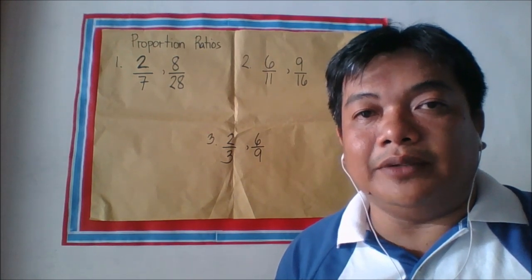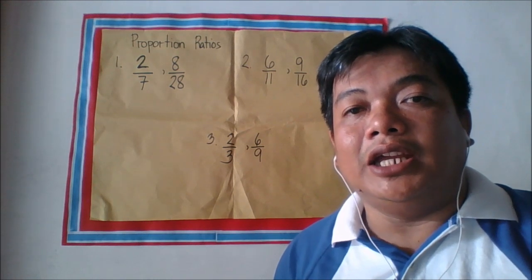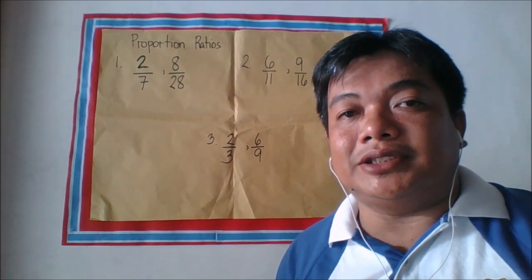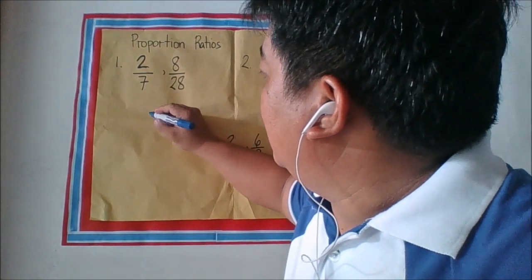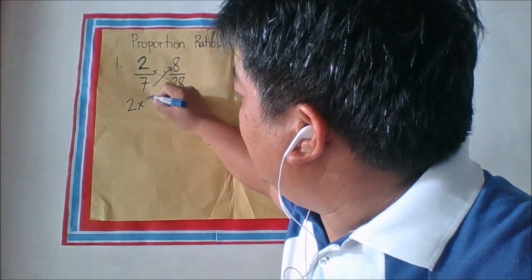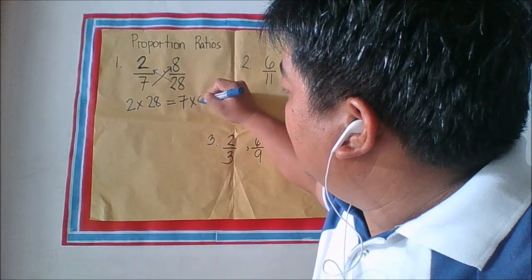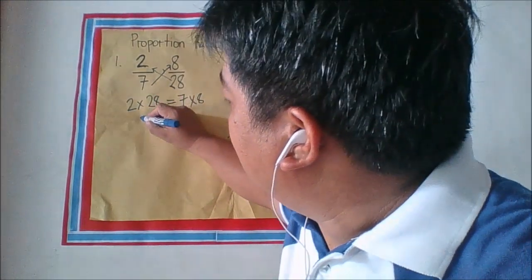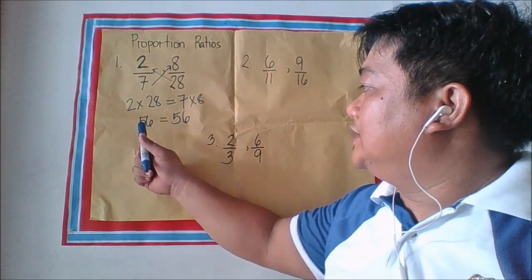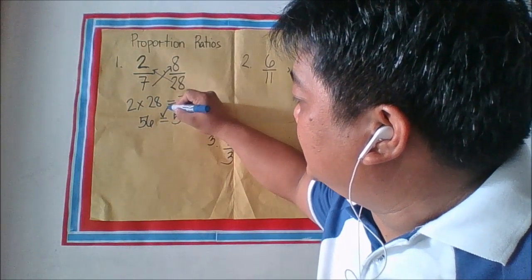To continue, let us identify whether these ratios are proportional. We can say that ratios are proportional if the product of the first term and the last term is equal to the product of the second term and the third term. So let us try example number one. We cross multiply: two times 28 is equal to 56, and seven times eight is equal to 56. Since the products are equal, these two fractions are proportional.